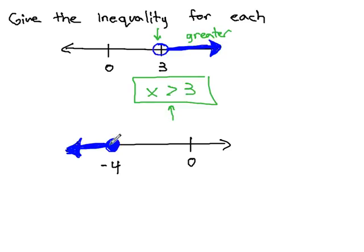The graph below it goes off to the left to smaller, lesser values. When we go off to the left to smaller, lesser values, we want our variable x to be less than our number, negative 4.